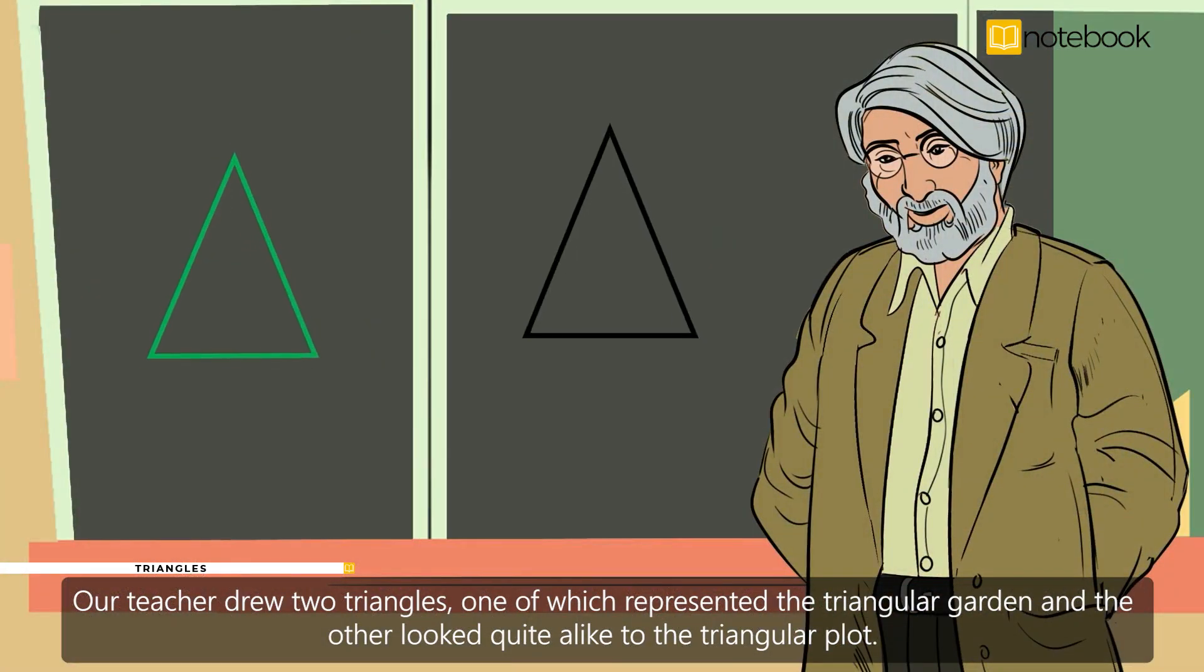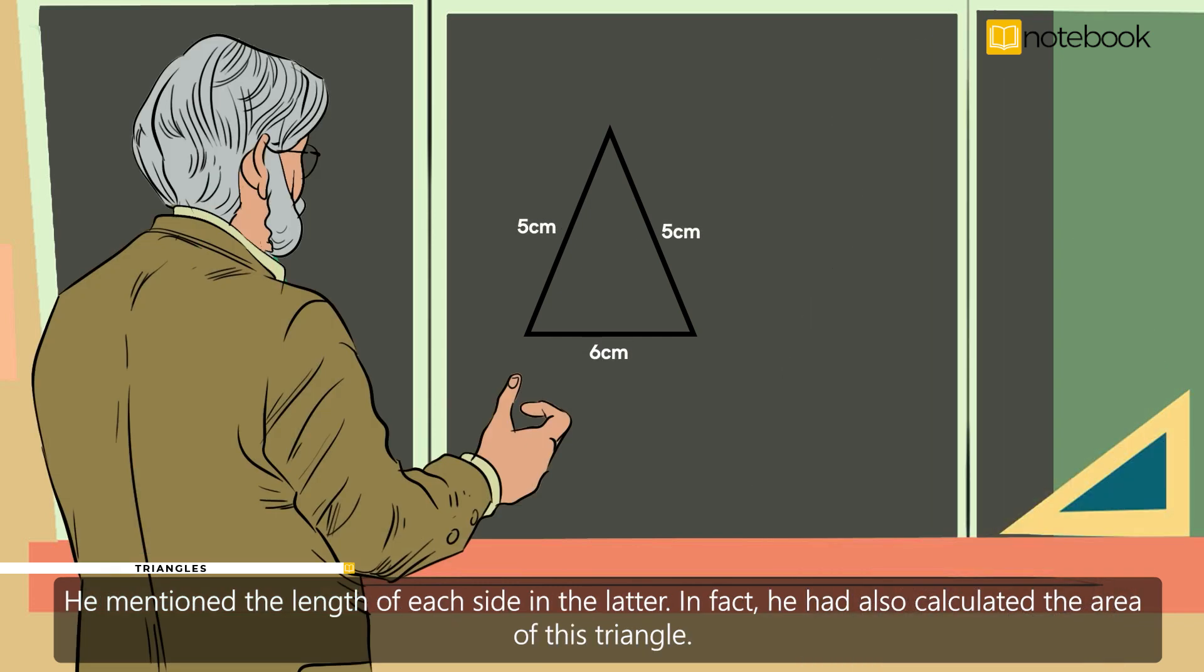Our teacher drew two triangles, one of which represented the triangular garden, and the other looked quite alike to the triangular plot. He mentioned the length of each side in the latter. In fact, he had also calculated the area of this triangle.